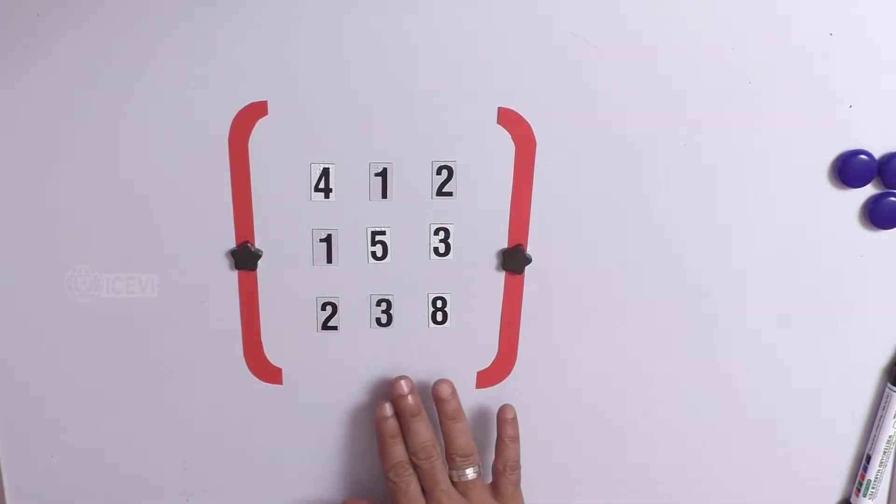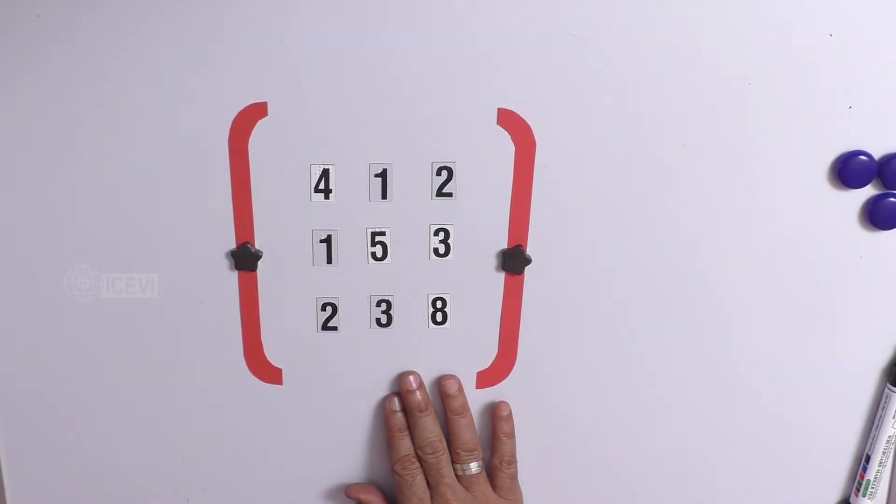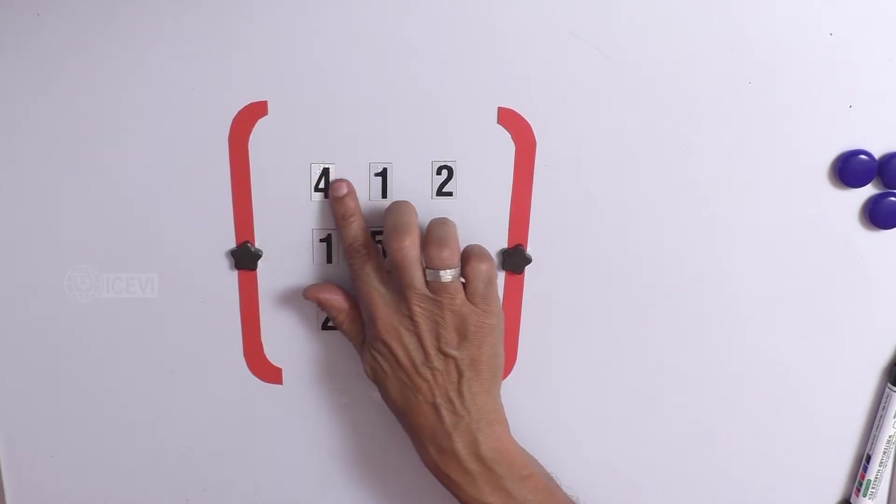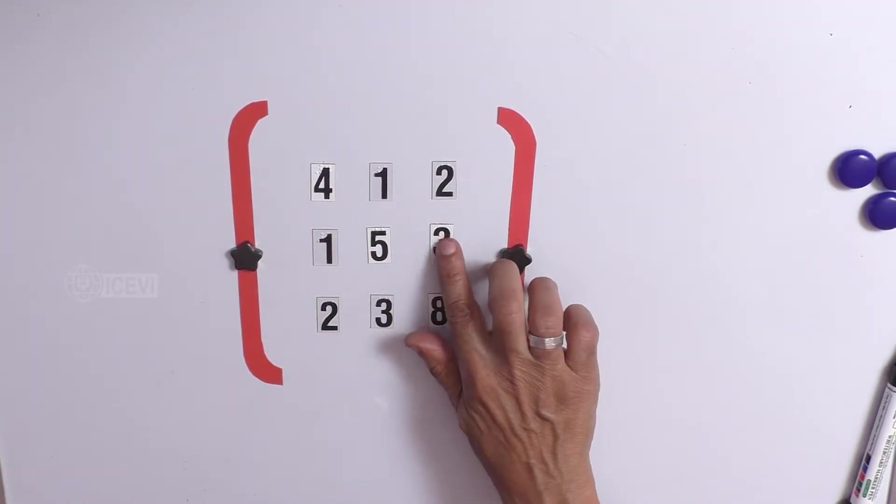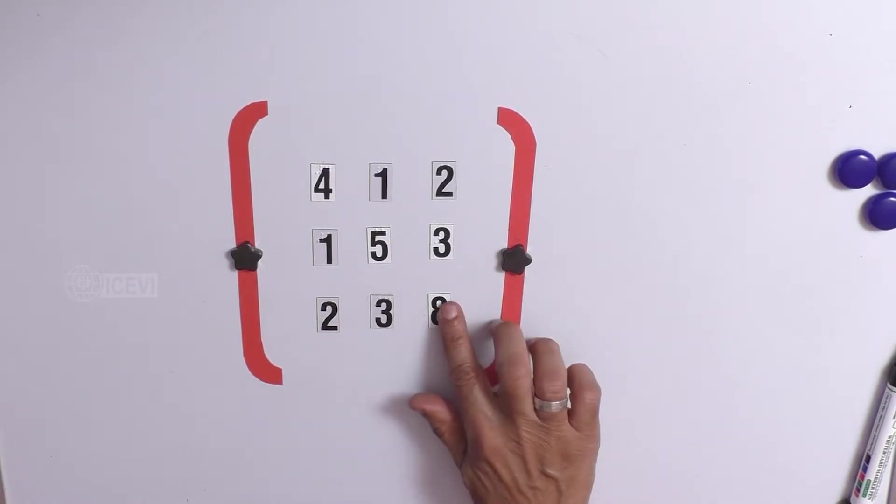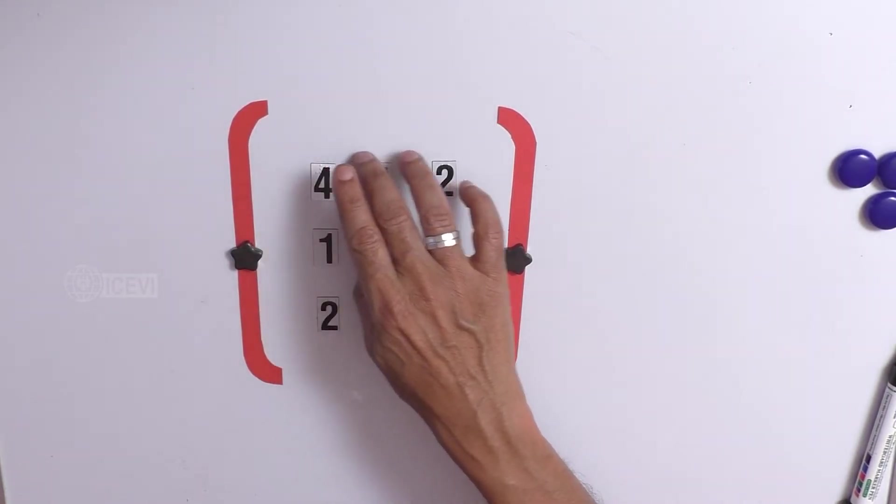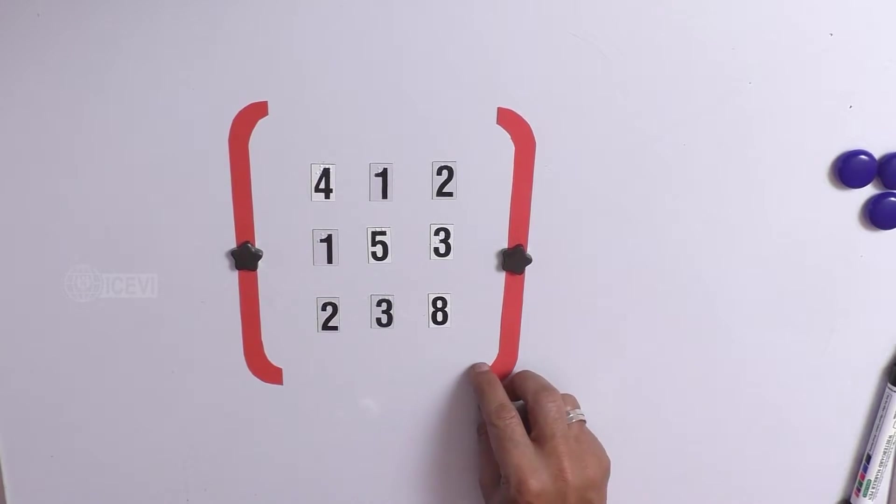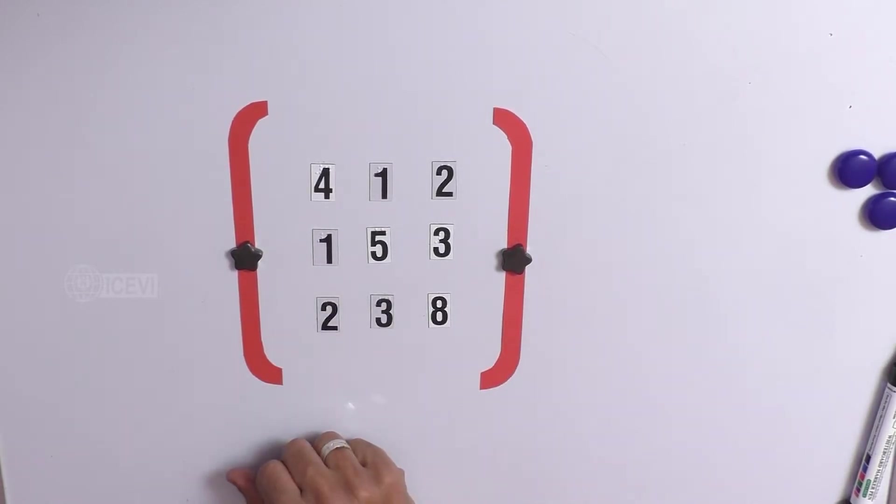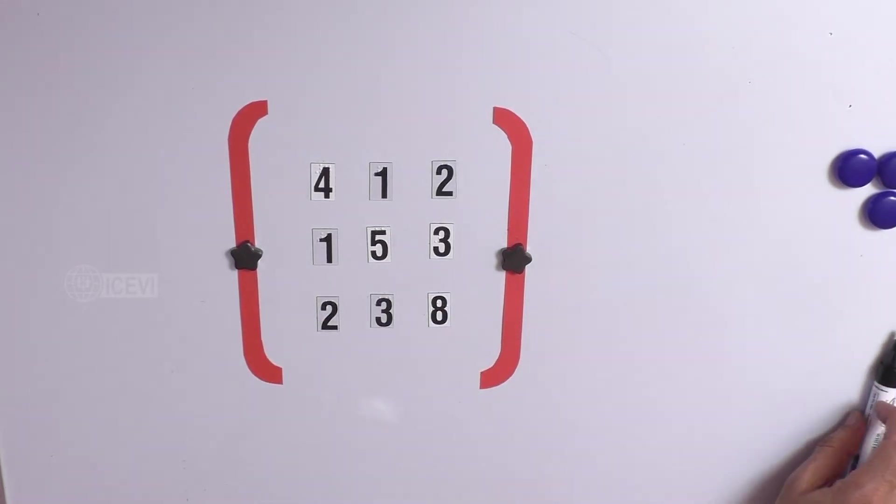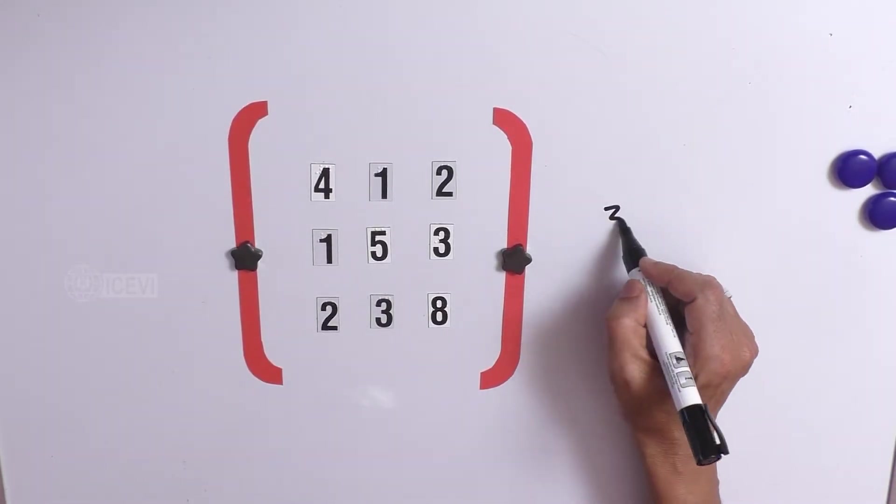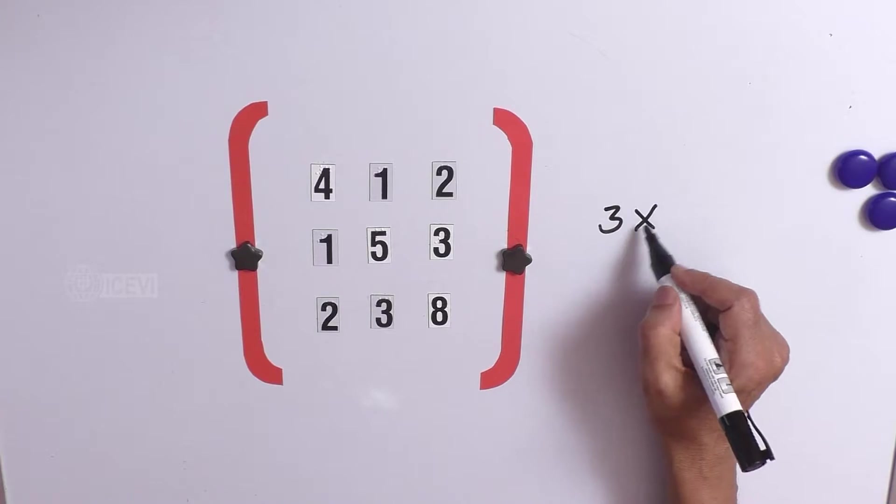Now, how many elements are here in the matrix? Let the child count 1, 2, 3, 4, 5, 6, 7, 8, 9. What is square? There are 9 elements in the matrix, but it is arranged in the form of 3 rows and 3 columns.